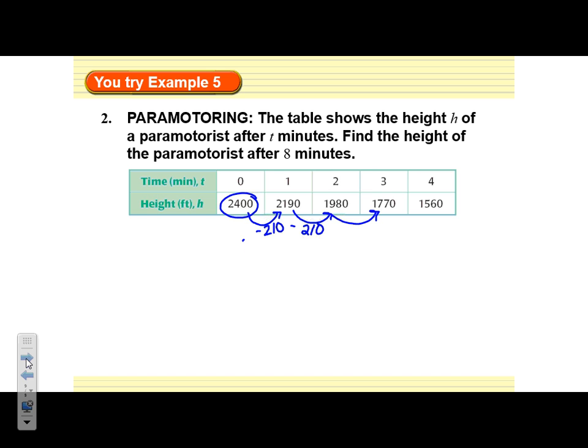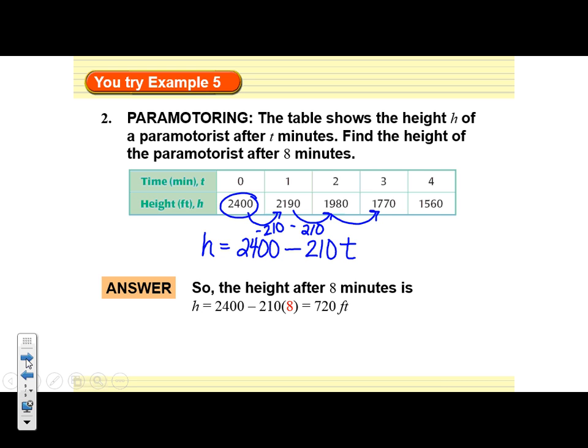So if we use what we know about where he started and how it's changing, we can go from there. How it started: he started at an initial height of 2,400 feet. He's descending 210 feet for every minute, I'm going to use t for minutes, that he's in the air. If I use this expression, I can calculate the height at any given time. So I'll use what I have right there and plug in 8 since it asked us for after 8 minutes. And if I use that equation and plug in the 8, you can see that we have 720 feet.